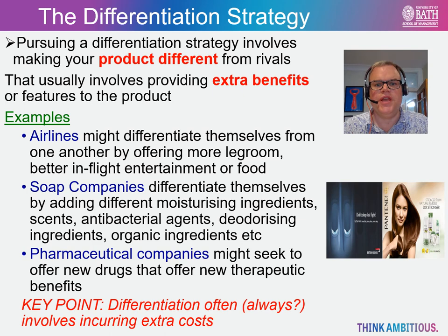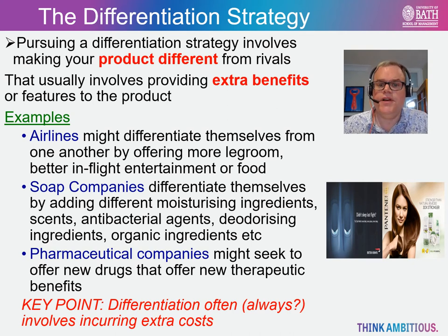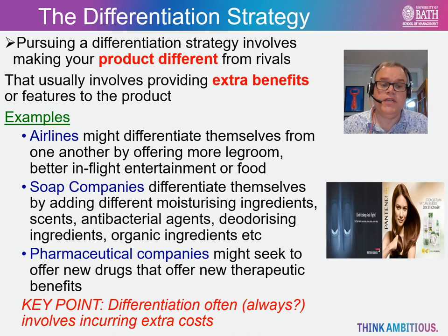We'll start with the differentiation story. We've already explored product differentiation in a previous session but here we'll focus upon it in the context of firm strategy. In essence, pursuing a differentiation strategy involves the firm making its product different from rivals, and this usually involves providing extra benefits or features to the product, or even using advertising to create the perception that the product or service being offered is of a better quality. Examples abound from across a range of sectors. For instance, airlines often seek to differentiate themselves from one another by offering more legroom or better in-flight entertainment or food. Cosmetics companies will differentiate themselves by adding different moisturizing ingredients, scents, antibacterial agents, deodorizing ingredients and organic ingredients and so on.